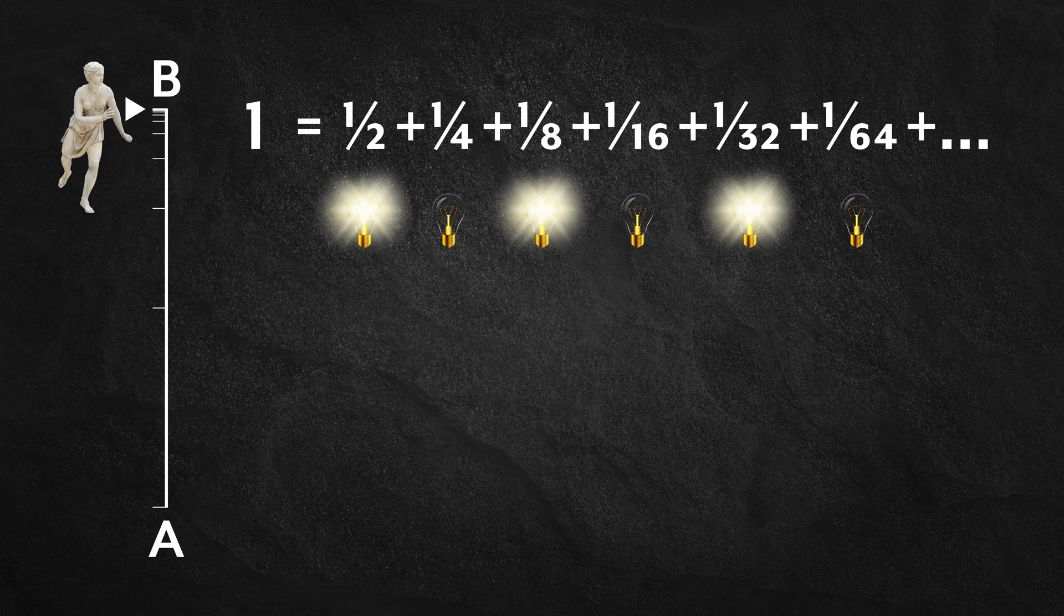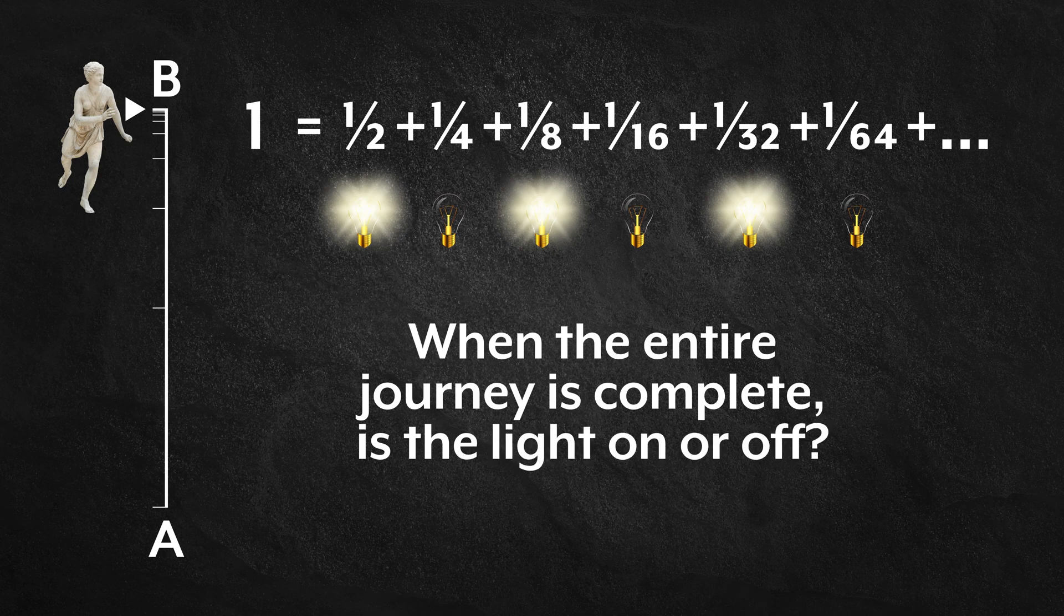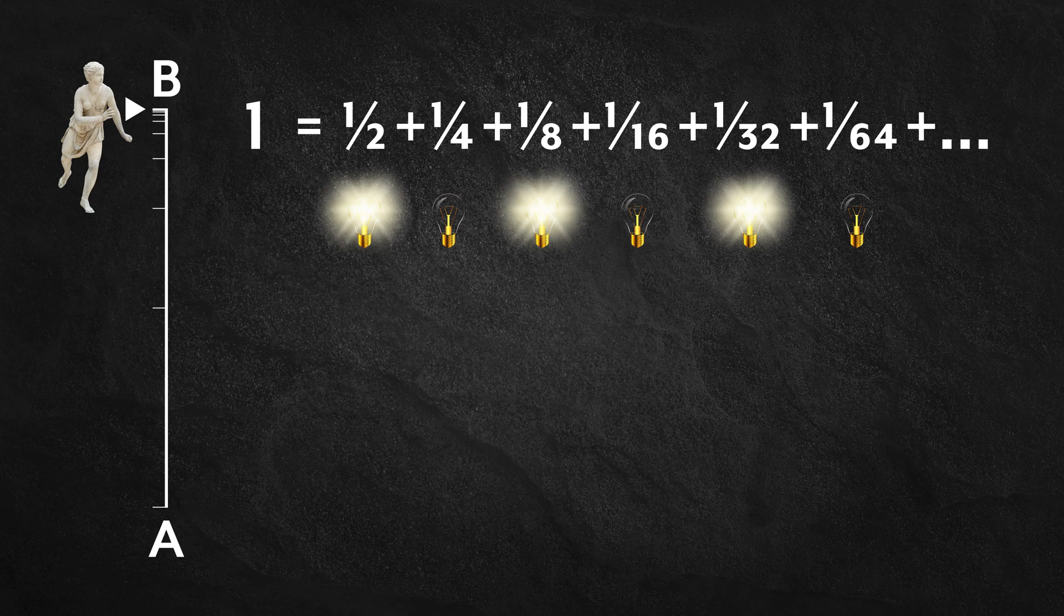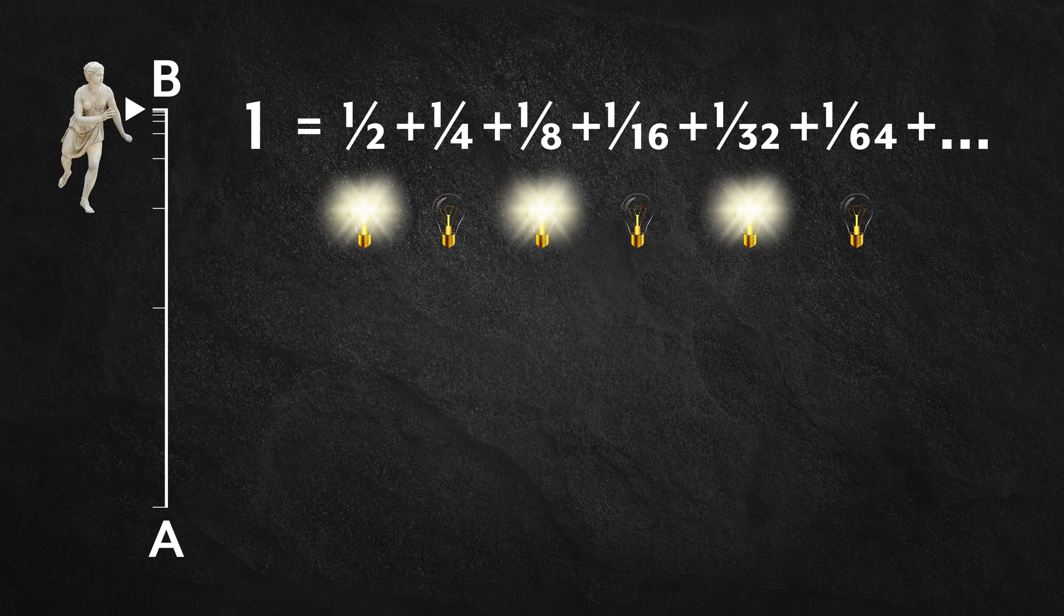And the question is, when the entire journey is complete, is the light on or off? It can't be on, since each moment the light is turned on there is a later moment at which it is turned off. But it can't be off, since each moment the light is turned off there is a later moment that it is turned on. The light doesn't converge to a final state.